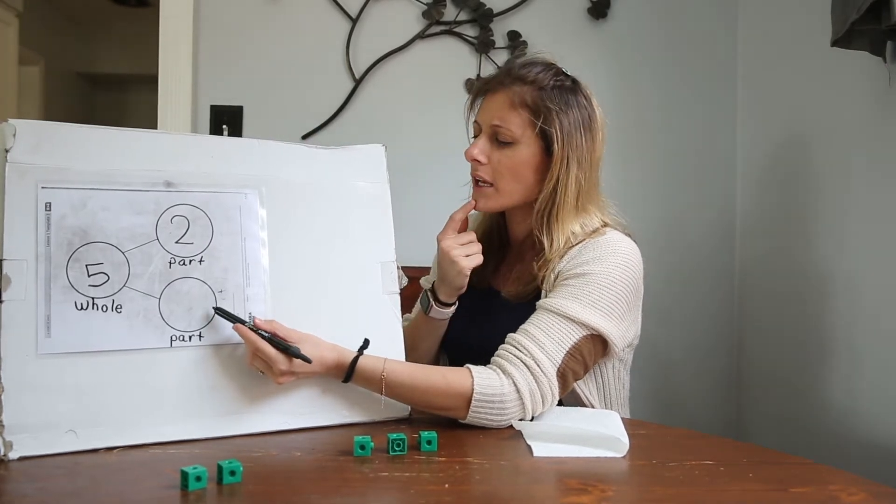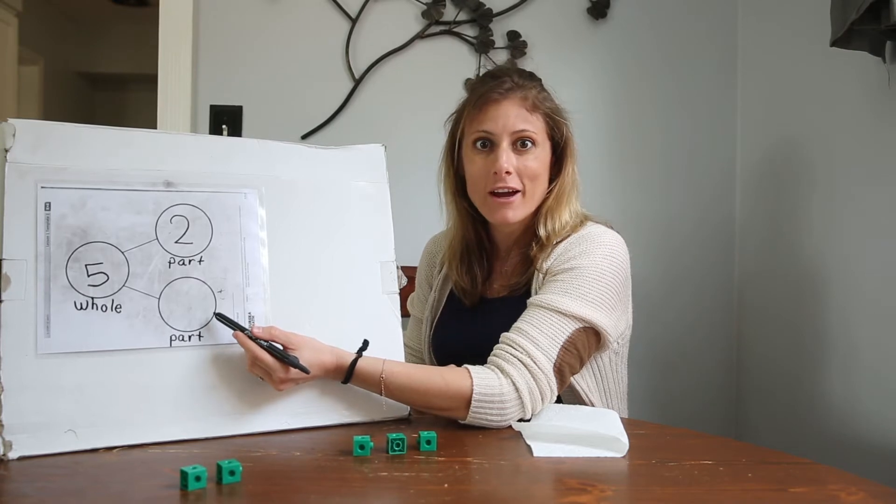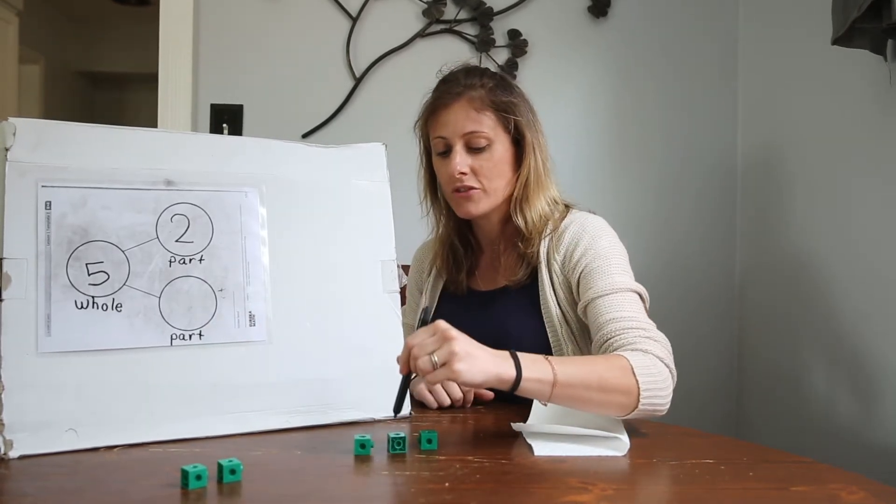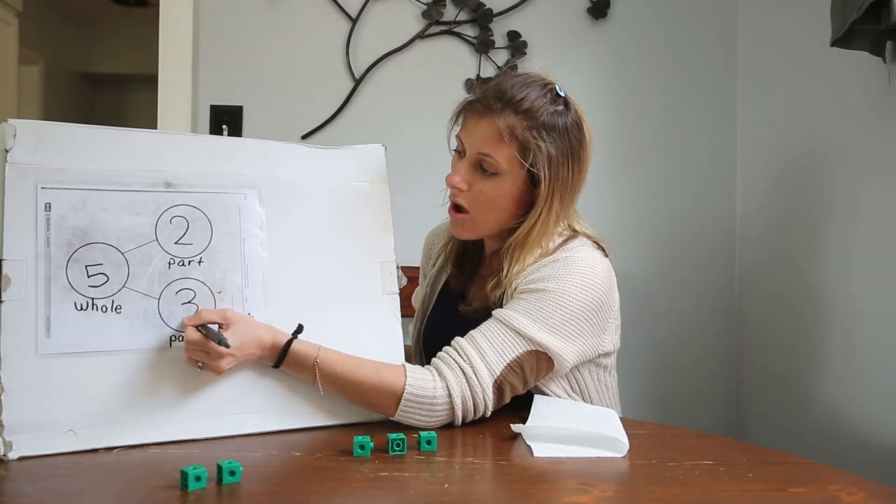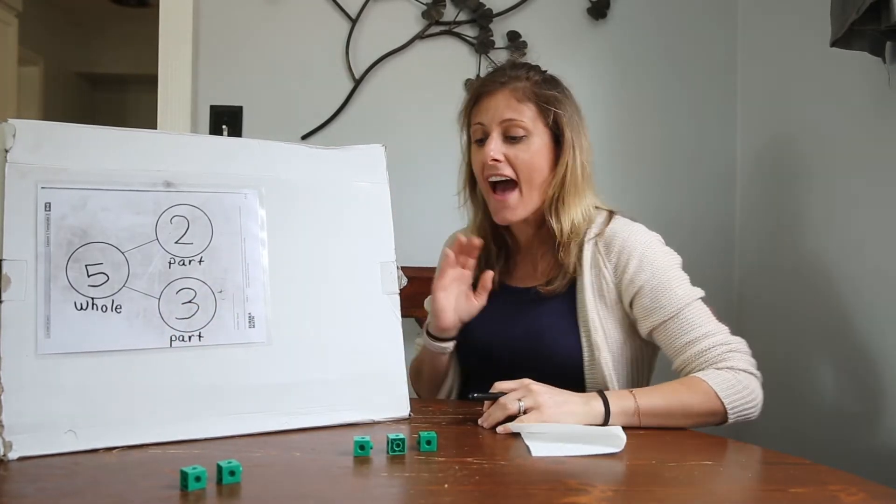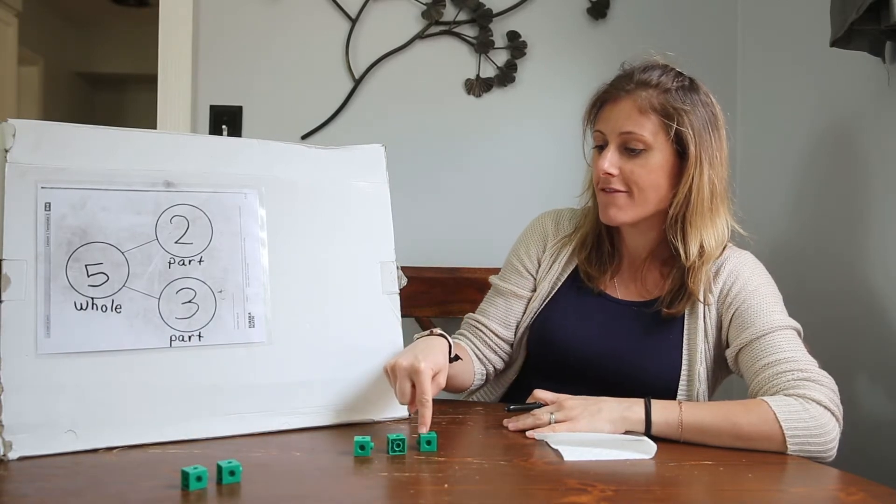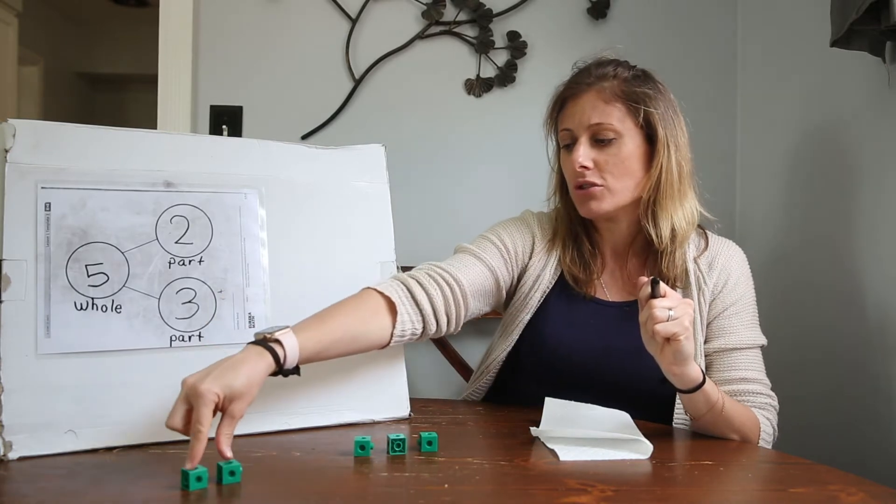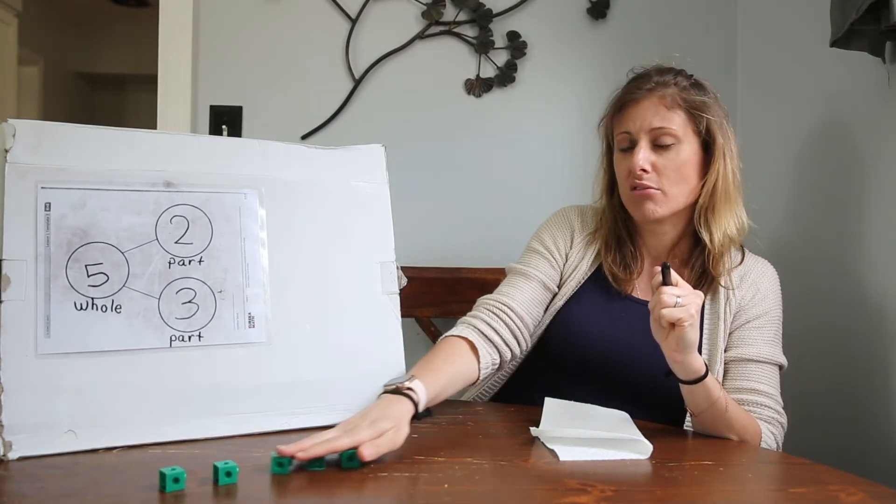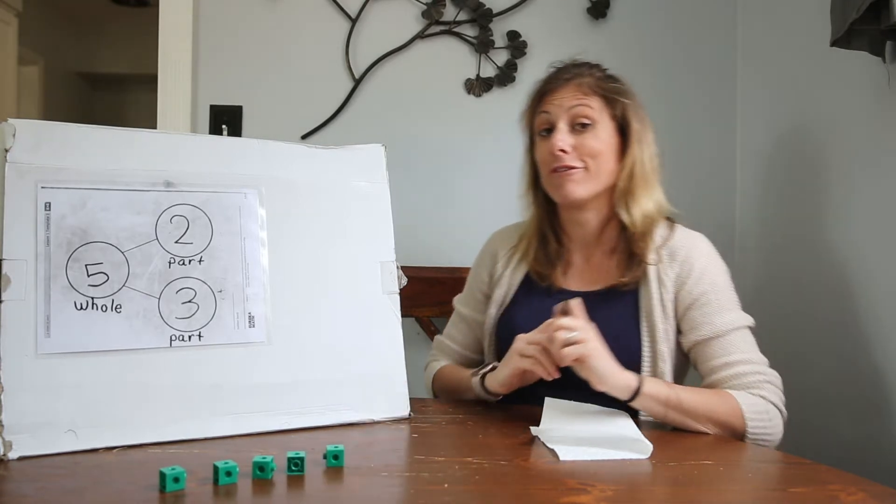And what number is it again? I can't remember. I'm gonna go back and recount. One, two, three. So five, one, two, three, four, five, can be broken apart into two and three. Kind of fun, isn't it?